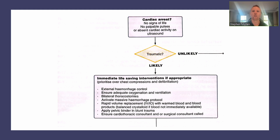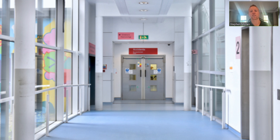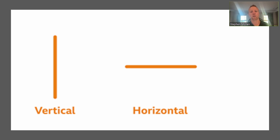The bundle includes: controlling haemorrhage, considering a pelvic binder, bilateral thoracostomies, ensuring oxygenation and ventilation, and getting blood products in. When the patient arrives, we practise a horizontal approach — so A, B, C, and D are all being assessed simultaneously, with information fed back to the trauma team leader.